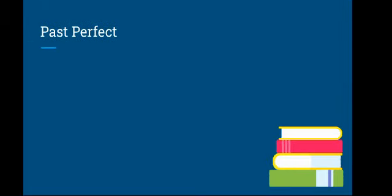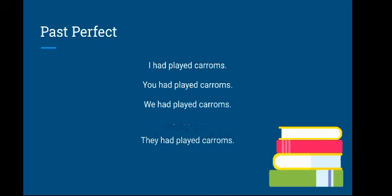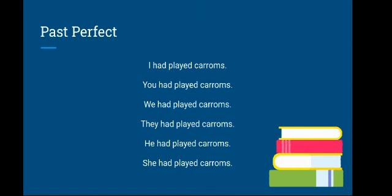Today we are going to learn only two tenses and their combination: past tense and past perfect tense. Their combination is important because most of the blanks in exercises are related to this. In our next class we will learn past continuous and past perfect continuous. Now, past perfect tense — sentence structure: I had played caroms. You had played caroms. We had played caroms. They had played caroms. He had played caroms. She had played caroms. Raju had played caroms. So the structure is had + V3 — had plus the past participle form of the verb.